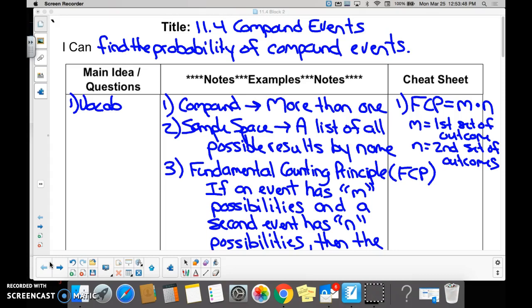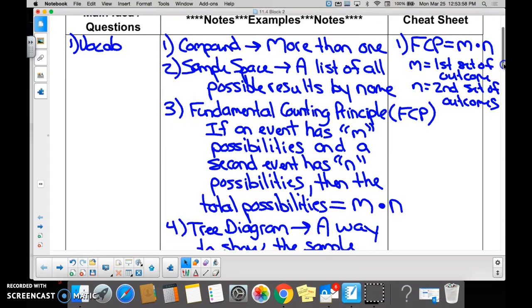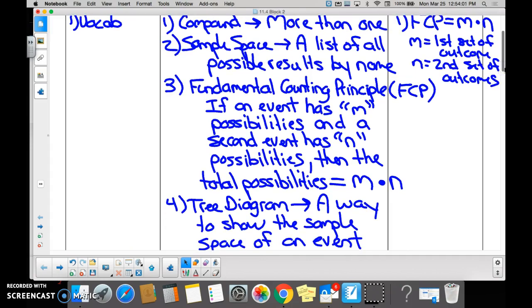Can you guys find the probability of compound events? What does compound mean? Compound means more than one. A sample space—what's another name for a sample space? It's a menu, right?